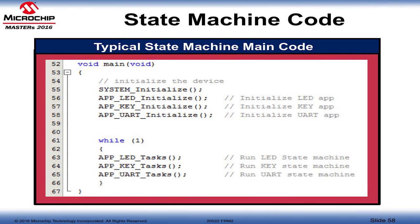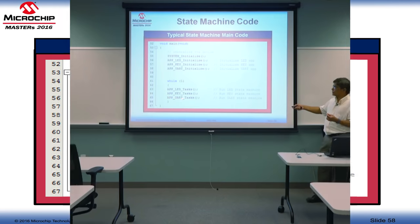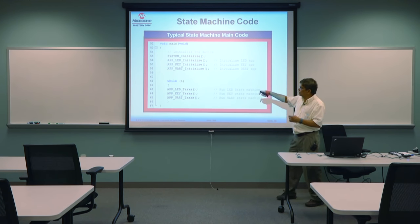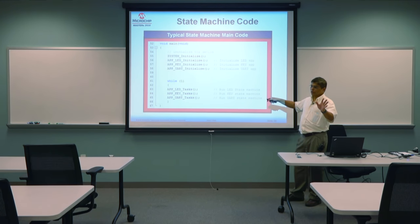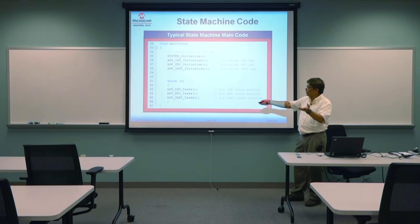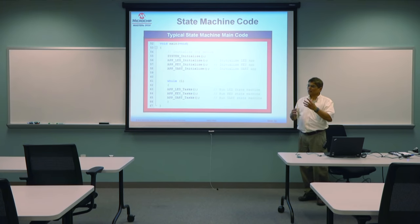In your main program: do a system initialize, then initialize all state machines — application LED, application key, application UART. In the main loop, run each task: application LED task, application key task, application UART task — repeating forever. Each function gets its turn, none takes full control, and interrupts provide input separately for each peripheral.